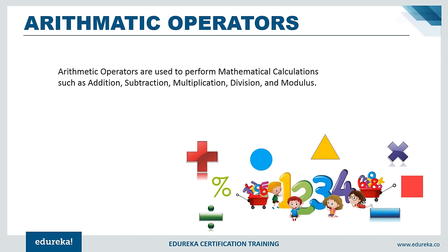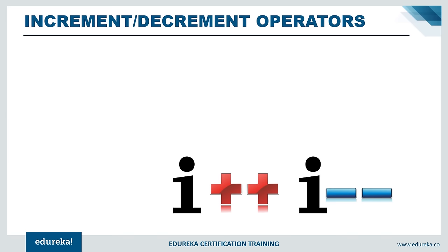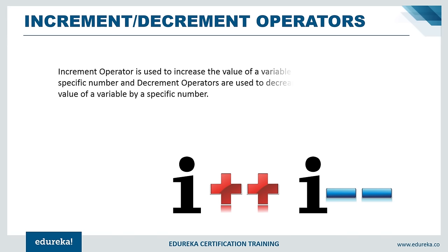Next are increment and decrement operators, which are used when loops are included in a program. The control statement executes multiple times when these operators are included. i++ defines incrementing and i-- defines decrementing. You can use any variable from a to z along with the ++ (increment) or -- (decrement) symbol.